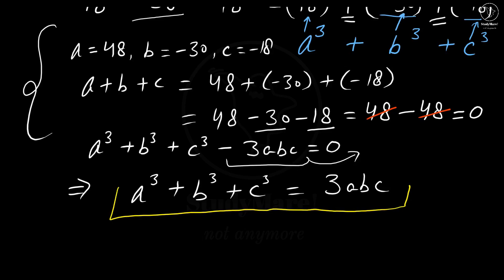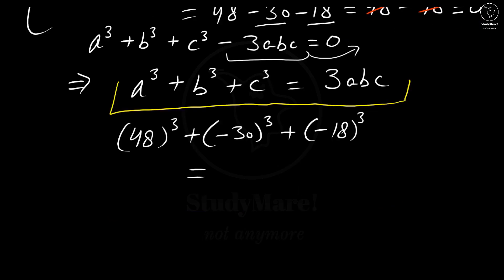So here, a is 48³ plus b is (-30)³ plus c is (-18)³, which is equal to 3abc - a means 48, b means -30, and c means -18.